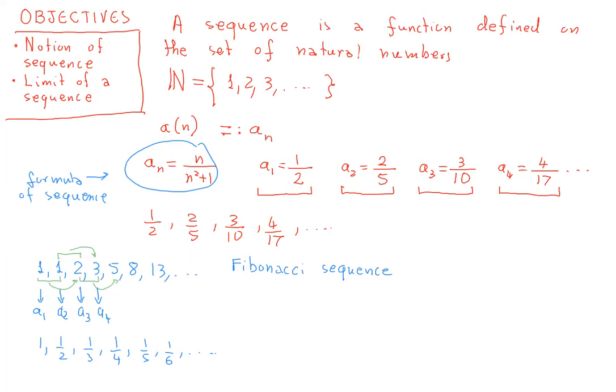By the same token, if I wrote down the sequence 2 over 1, 3 over 2, 4 over 3, 5 over 4, 6 over 5, 7 over 6, 8 over 7, and so on and so forth, then one again could get the idea that terms of the sequence approach 1.